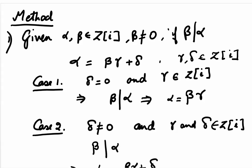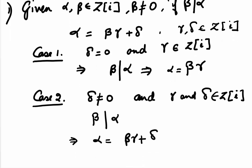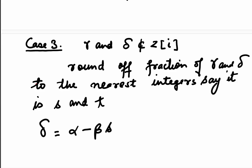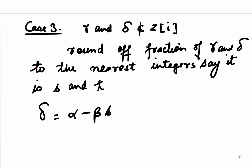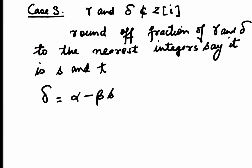Second case: when our delta is not equal to 0 and gamma and delta both are Gaussian integers. In that case, beta will divide alpha and we will be able to write alpha equals beta gamma plus delta. Third case: what if when we divide alpha by beta, we find that our gamma and delta are not Gaussian integers? In that case, we round off the fractions of gamma and delta to the nearest integers and call them s and t. Then we find delta by subtracting beta s from alpha. All this will be clear when we come to the examples.